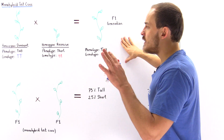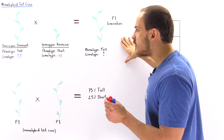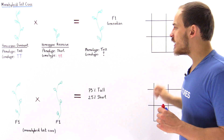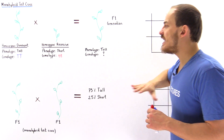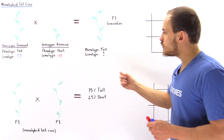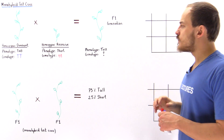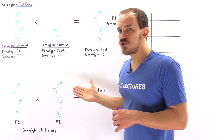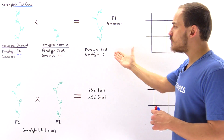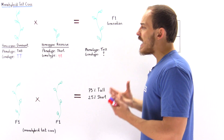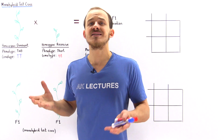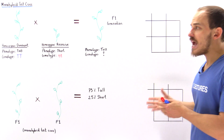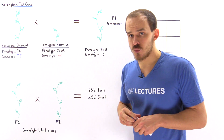Every time he conducted this same experiment, he always found that the F1 generation offspring was always tall — it was never short. The question is: what exactly is the genotype of this F1 generation? To determine what the genotype is, we have to determine all the possibilities of that genotype, and to do that we have to apply the Punnett square.